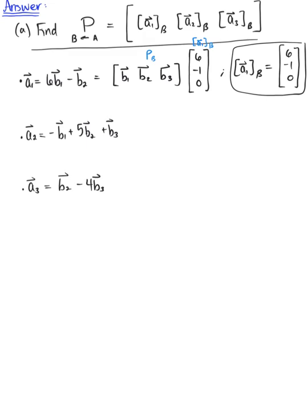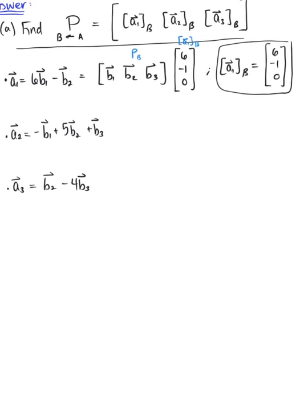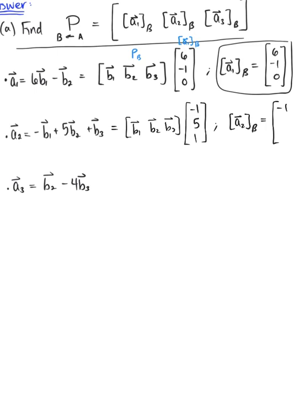Now we want to do the same thing with the other two. We can rewrite a₂ as the matrix equation with column vectors b₁, b₂, b₃ multiplied by the column vector of weights negative 1, 5, 1. Therefore the coordinates of vector a₂ relative to basis b is the column vector negative 1, 5, 1 — the second column vector of our matrix.